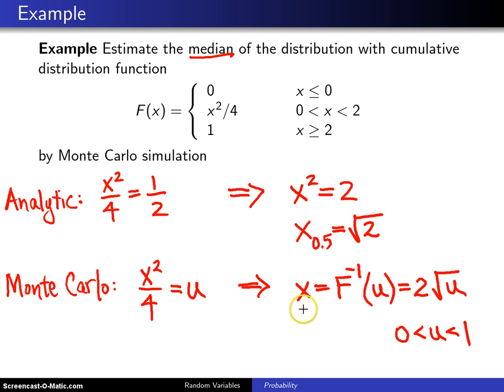So in order to get a random variant, all we have to do is take a uniform 0, 1 random variable, plug it in here for u, take its square root, double it, and that will give us a random variant. And that's exactly what we're going to do on the next page.